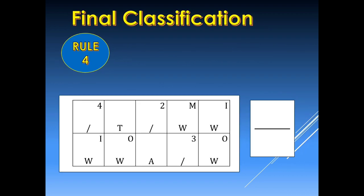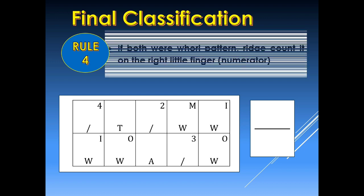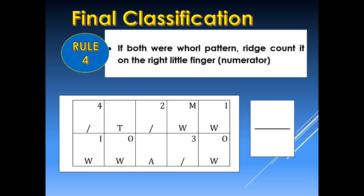The question is: what if there are no loop patterns on both little fingers? That brings us to rule number 4. If both fingers are whorl patterns, we are going to ridge count the right little finger and place it in the numerator.